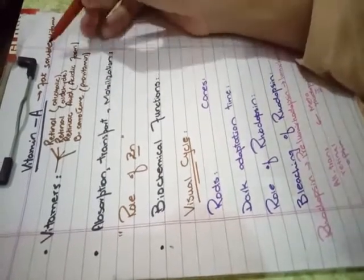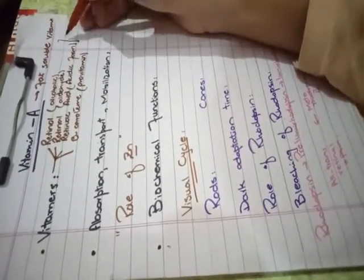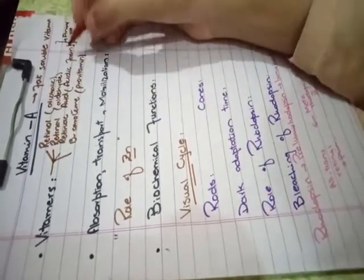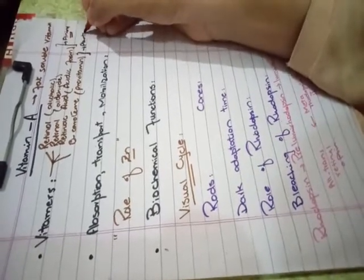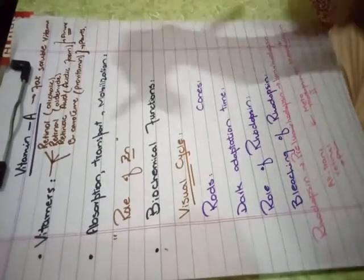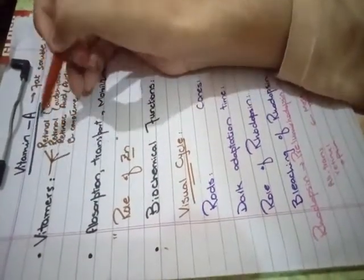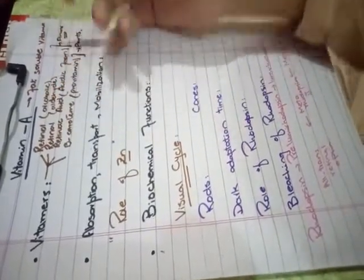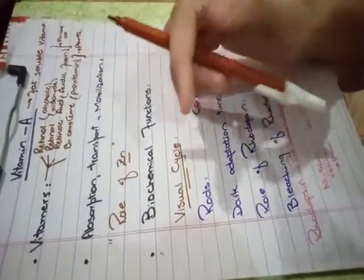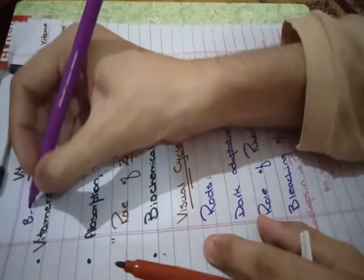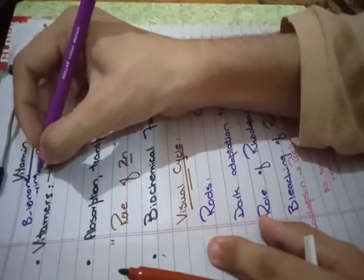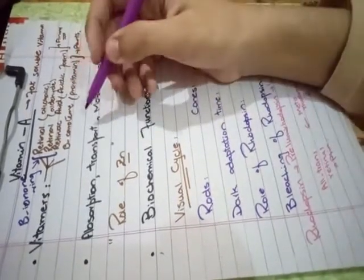The first 3 forms are from animal sources, and beta-carotene is from plant sources. These 3 forms are inter-convertible and they have a special property: they all have a beta-ionone ring.